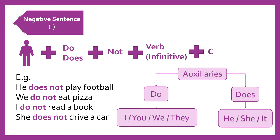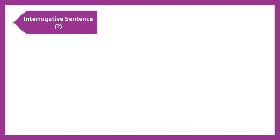Next, I do not read a book — yo no leo un libro. Also in this case we use the auxiliary do because we're using the pronoun I. And finally, she does not drive a car. In this case we do not add an S to the verb again because it is a negative sentence, and we use the auxiliary does because we're using the pronoun she. Acá hay dos cosas importantes: no le vamos a agregar una S al verbo porque esta es una oración negativa, y también utilizamos el auxiliar does porque estamos utilizando el pronombre she.